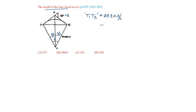That is equal to 2 into r, which is 400, into sin 30 degrees, which will be equal to 400 meters. Option B.